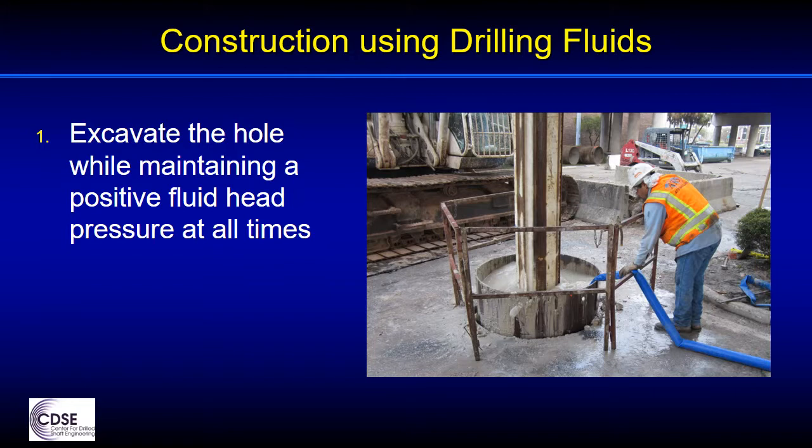The steps in the process of constructing a drilled shaft using drilling fluids for stability were described in the introductory lesson. Step 1: excavate the hole while maintaining a positive fluid head pressure at all times. You can see this worker adding fluid to make up for the volume of soil that will come out on the auger.